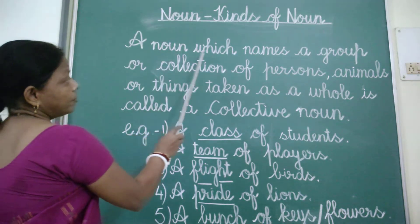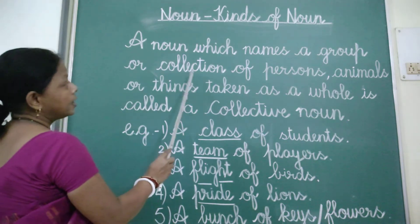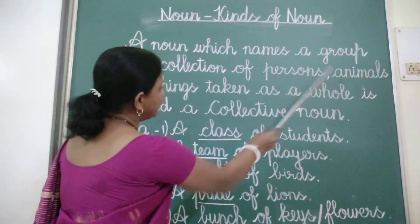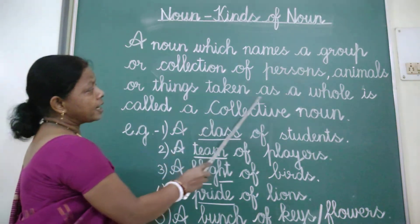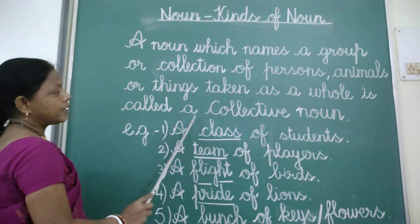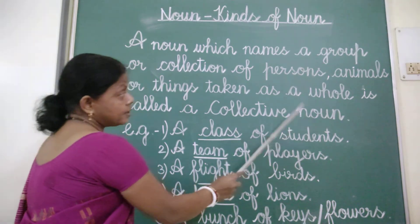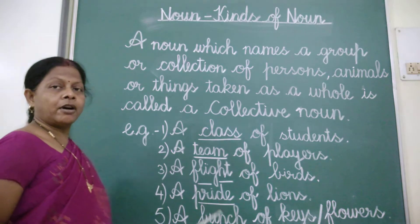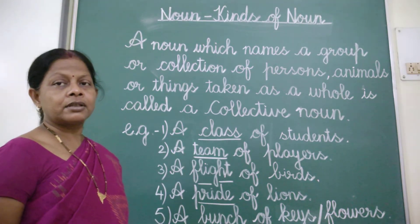A noun which names a group or collection of persons, animals or things taken as a whole is called a collective noun. It means collective noun is the name of a collection of persons, animals or things.